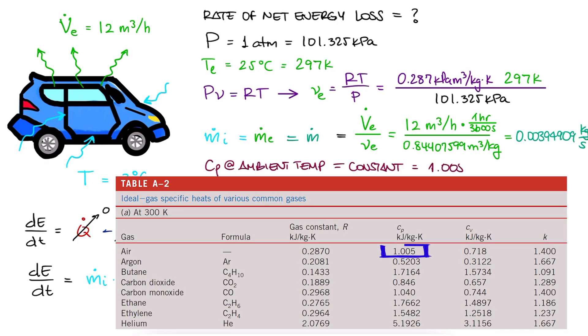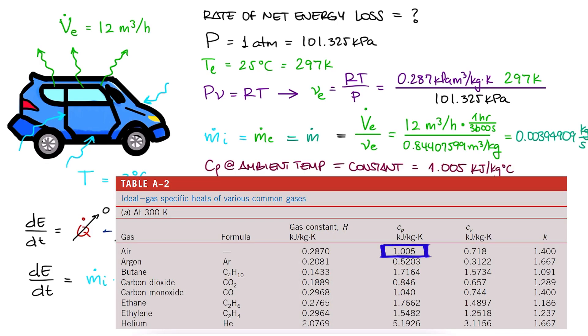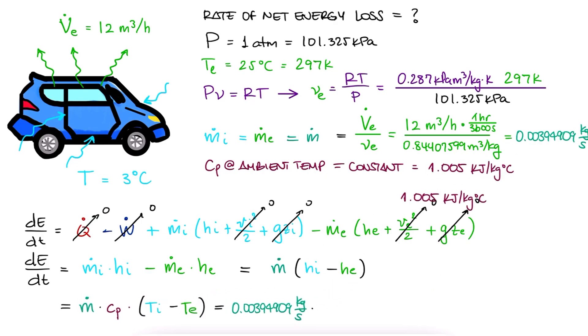We look up the specific heat at constant pressure for air, and substitute the mass flow, specific heat and temperatures, to find that the change in net energy is minus 87.3 watts. We can say that the energy loss is 87.3 watts.